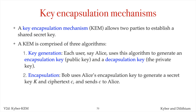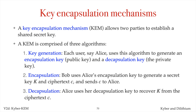Bob uses the encapsulation algorithm to generate a secret key and ciphertext using Alice's encapsulation key, and sends the ciphertext to Alice. Alice uses the decapsulation algorithm with her decapsulation key to recover the secret key from the ciphertext.